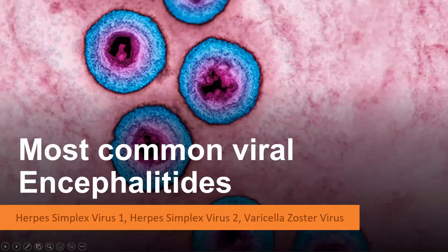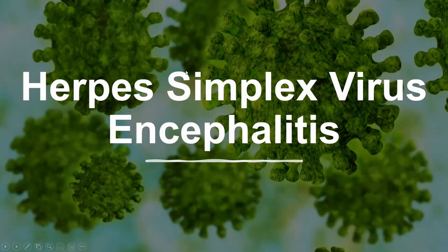Let's start with a discussion of the imaging findings of the most common viral encephalitides, which are number one, herpes simplex virus encephalitis, followed to a lot lesser extent, varicella zoster encephalitis. Let's start with herpes simplex virus encephalitis, the most frequent viral encephalitis in the general population, and let's start with a case.